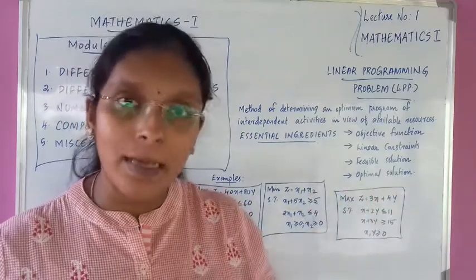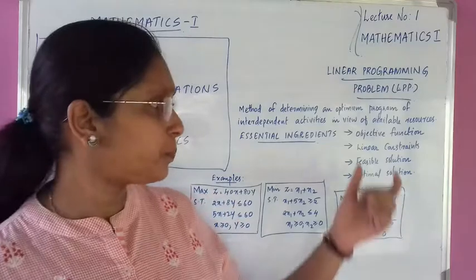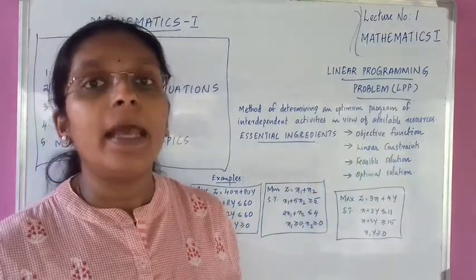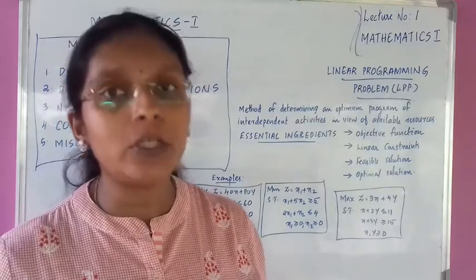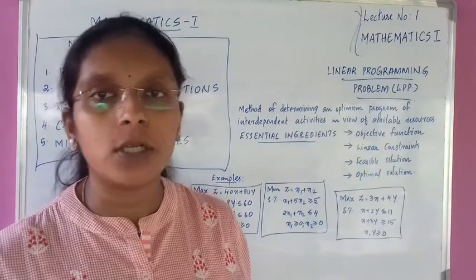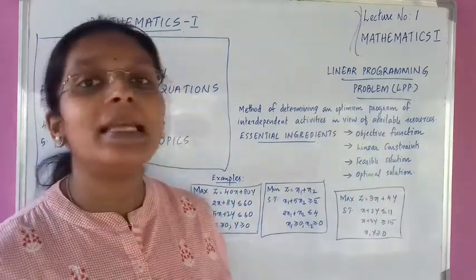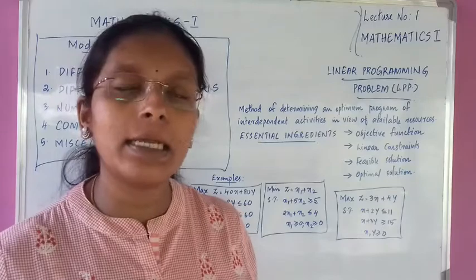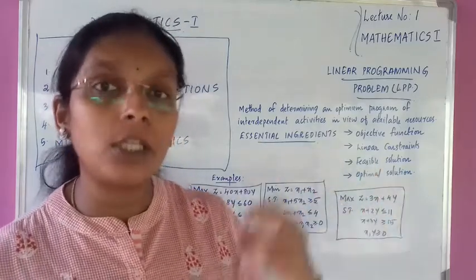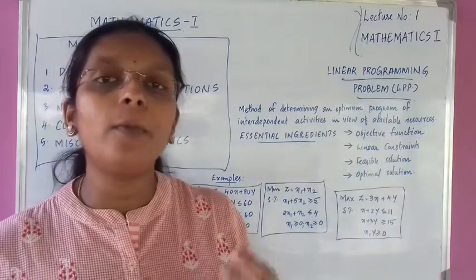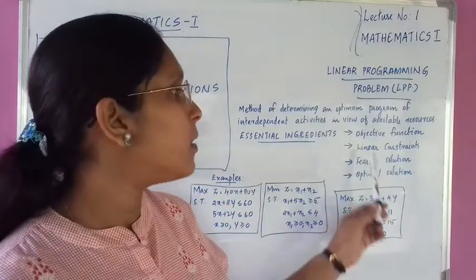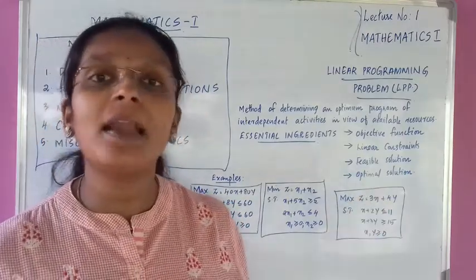The minimum consumer value comes from the LPP. What we aim for — our objective — is represented by the objective function. The second ingredient is linear constraints. Constraints means restrictions. The objective is to achieve our aims within those restrictions, which are represented as linear constraint functions.